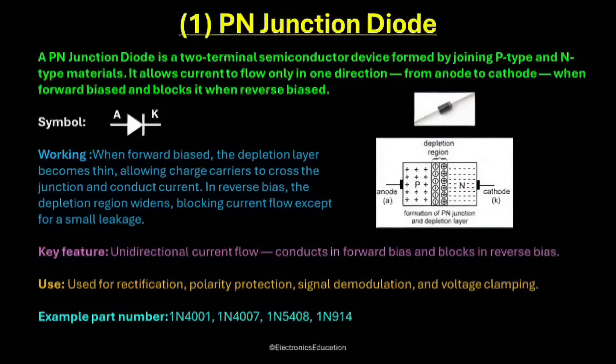In reverse bias, the polarity of the supply is reversed. The positive terminal is connected to the cathode and the negative terminal is connected to the anode. This increases the width of the depletion region, preventing the movement of charge carriers across the junction. As a result, almost no current flows, except for a very small leakage current.